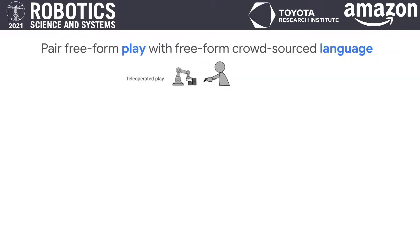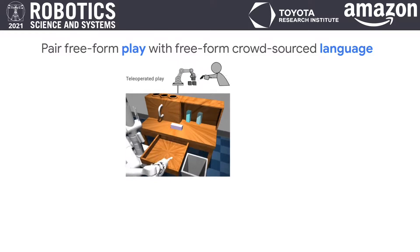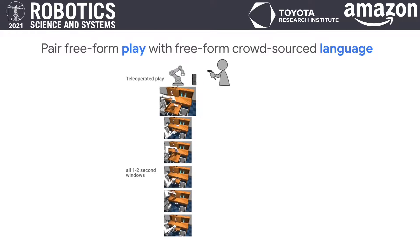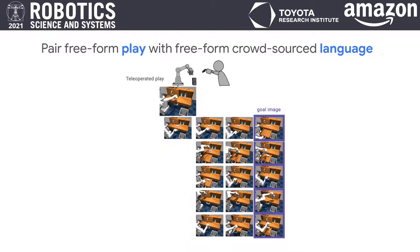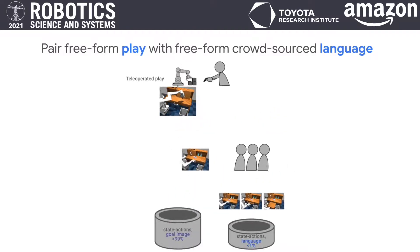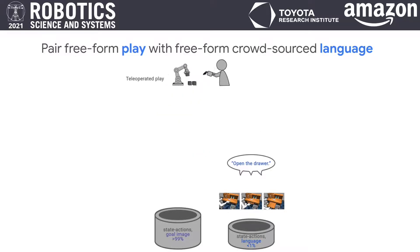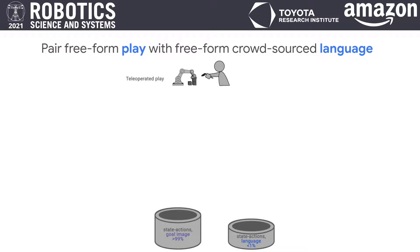We describe our data collection. We collect seven hours of unstructured teleoperated play, covering many useful behaviors in the environment. Next, we mine all one to two second windows and perform hindsight image relabeling. At the same time, we take less than 1% of these random windows and show them to crowdsourced annotators, asking them: what instruction would you have given the robot to get it to perform the behavior you just saw in the video? Mined demonstrations include meaningful tasks like 'open the door,' but also more general purpose behaviors like 'move your arm slightly to the left.' In this way, we obtain two demonstration data sets — one with demonstrations solving for goal images, the other with demonstrations solving for natural language instructions.